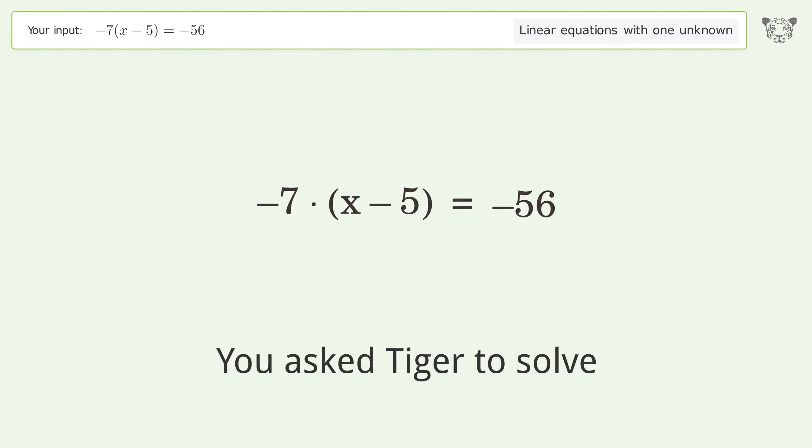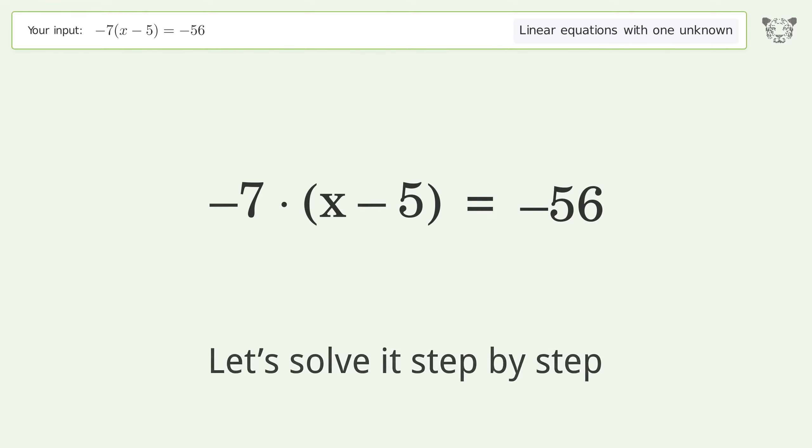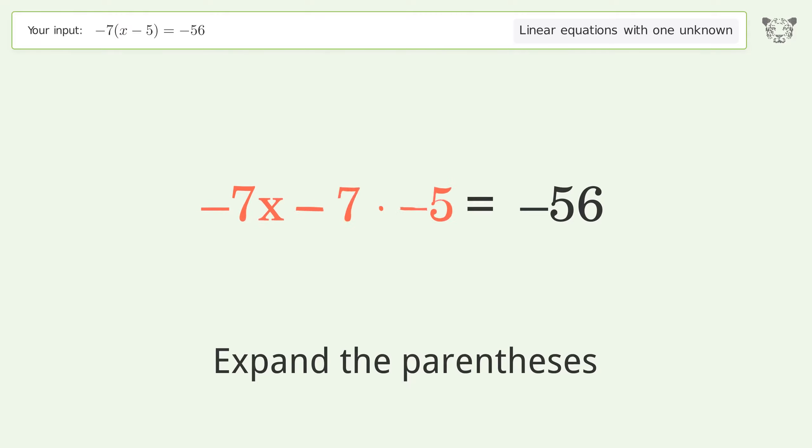You asked Tiger to solve this linear equation with one unknown. The final result is x equals 13. Let's solve it step by step: simplify the expression, expand the parentheses, and simplify the arithmetic.